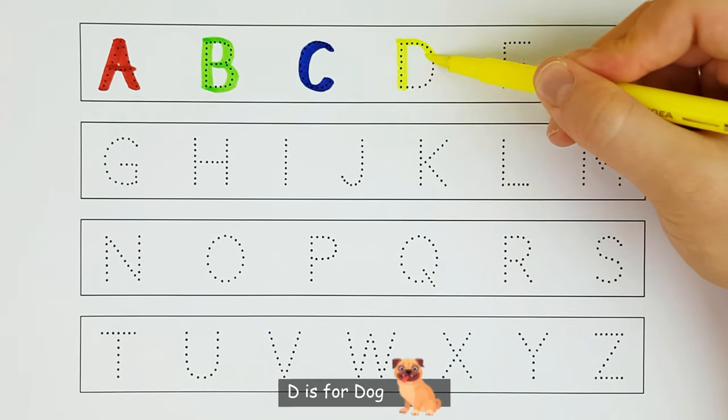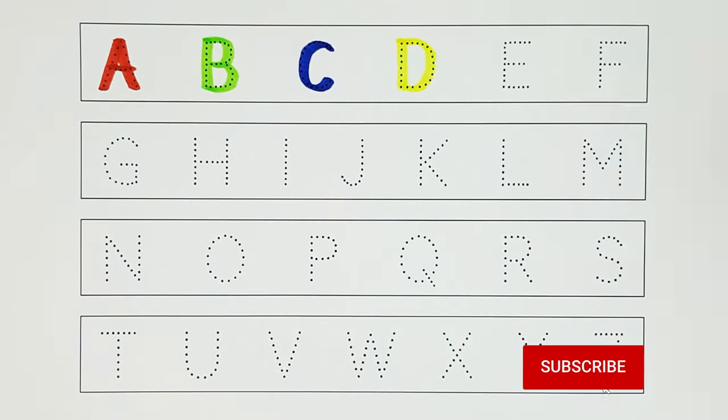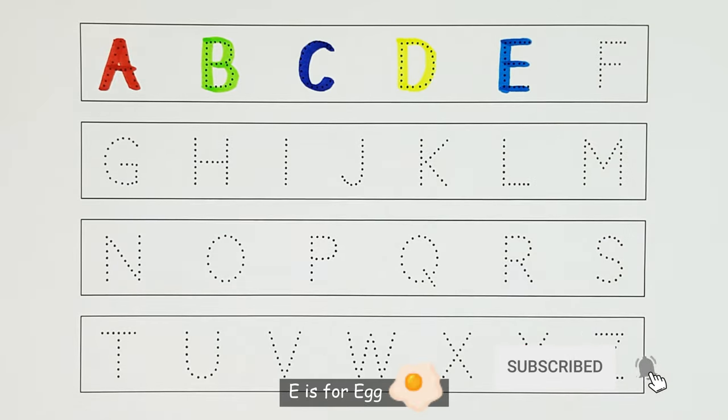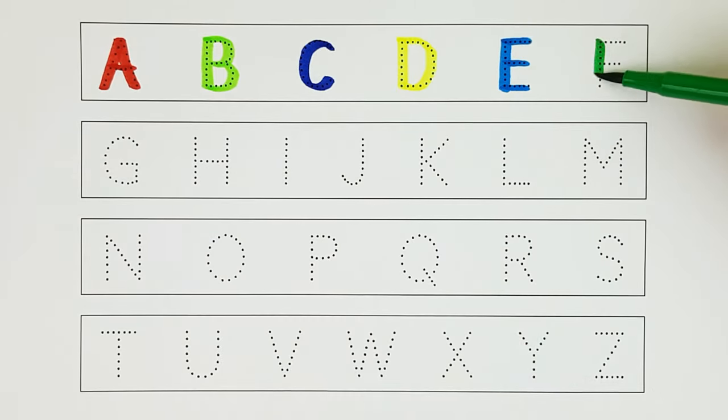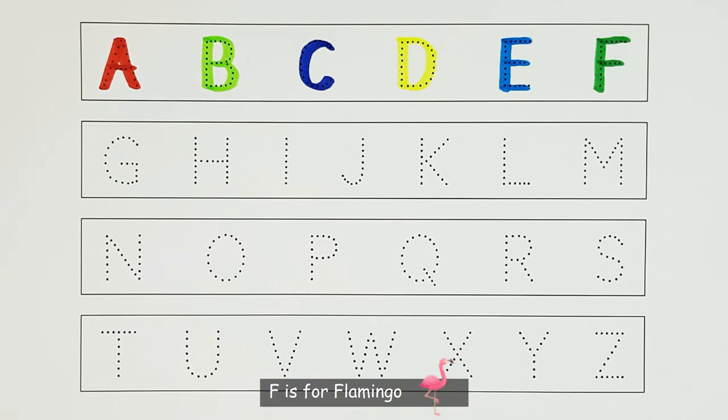D. D is for Dog. D. E. E is for Egg. E. F. F is for Flamingo. F.